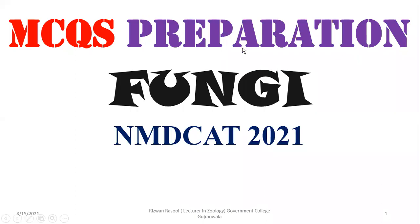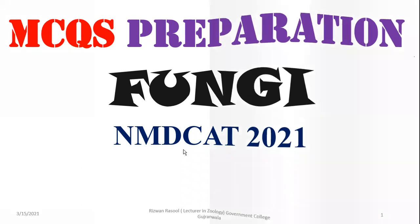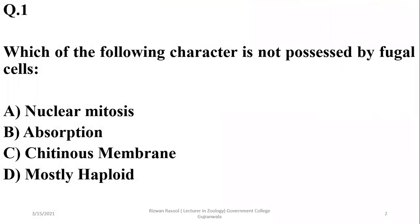Bismillahirrahmanirrahim. In this short video, we are going to have a discussion about MCQs related to fungi. Let's move to question number one. Which of the following character is not possessed by fungal cells? Fungal cells show nuclear mitosis, absorption, and they're mostly haploid, but chitinous membrane is not the feature. It's a chitinous cell wall actually, so the right option is C over here.